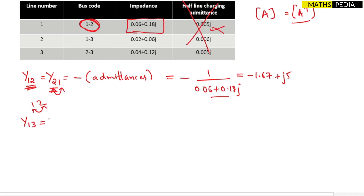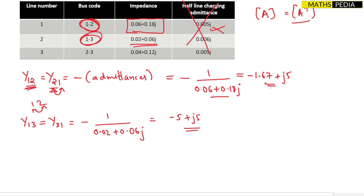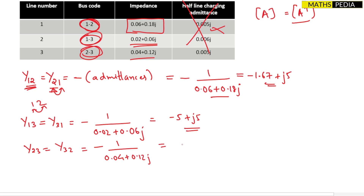y13 = y31 = −1/(0.02 + j0.06), which equals −5 + j5. For y23 = y32, if a node pair does not appear in the table, its admittance is 0. Here 2 to 3 is in the table, so y23 = −1/(0.04 + j0.12) = −2.5 + j7.5.